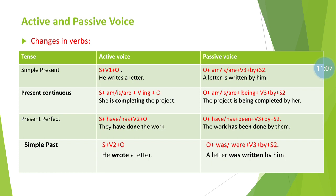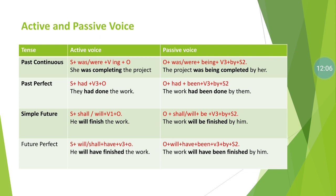Simple past tense: active structure is subject + V2 + object. For example, 'He wrote a letter' — V2 is used, so this is active voice. To transfer to passive: object + was/were + V3 + by + subject (second form). So 'He wrote a letter' becomes 'A letter was written by him.' The subject 'he' transfers to 'him,' the verb 'wrote' transfers to V3 'written,' and 'was/were' is used for past action.